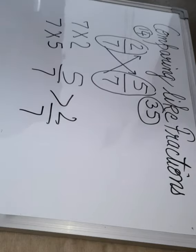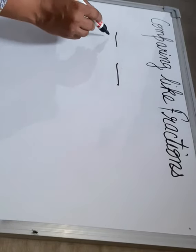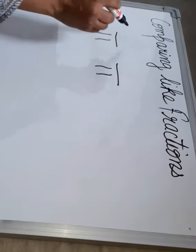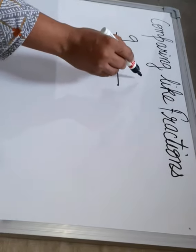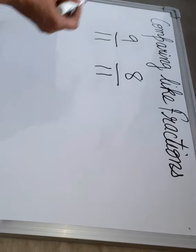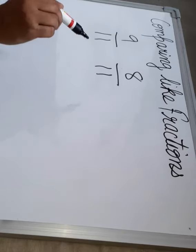Let us take one more example. So just two like fractions I am taking. Let the denominator be 11. Same denominators. And we can take the numerators as 9 and 8. So 9 by 11, 8 by 11. These are two like fractions. So what was the first step?